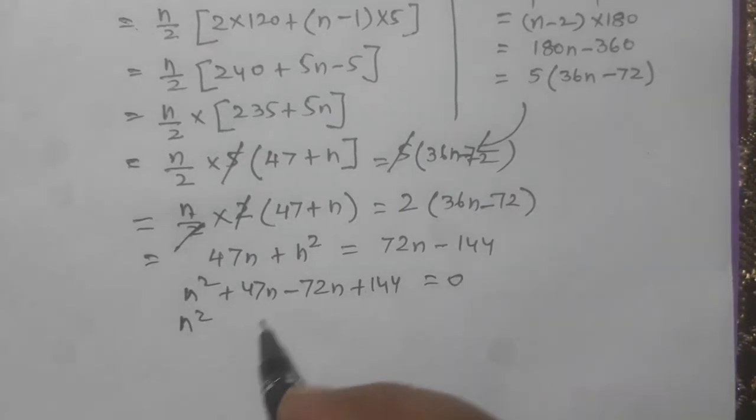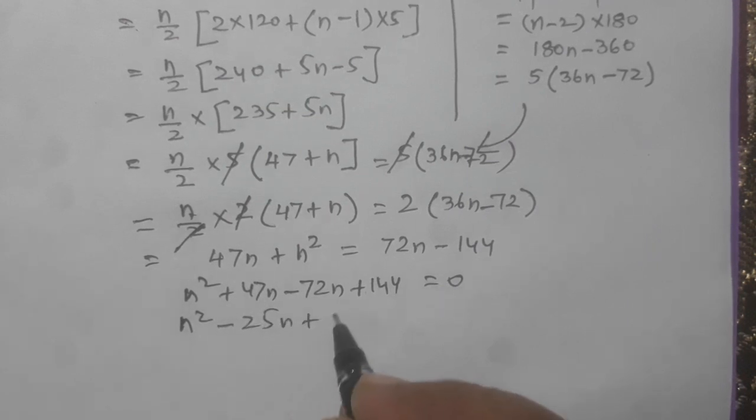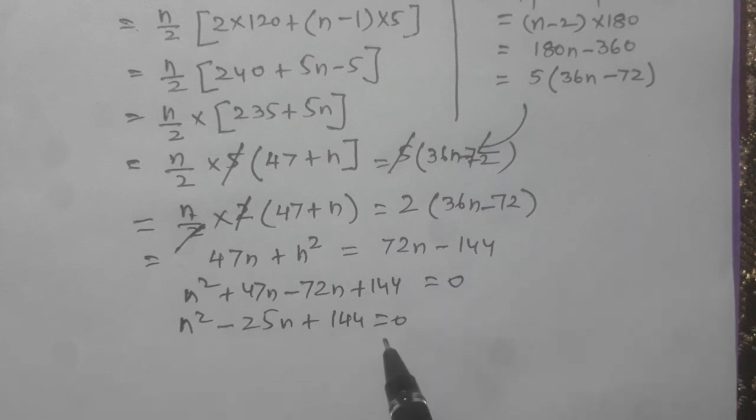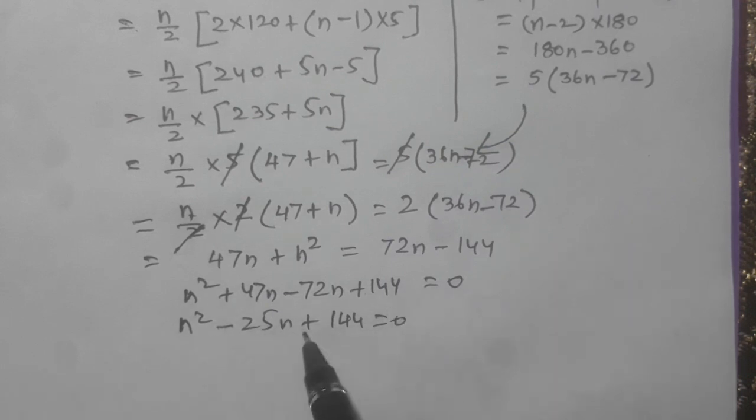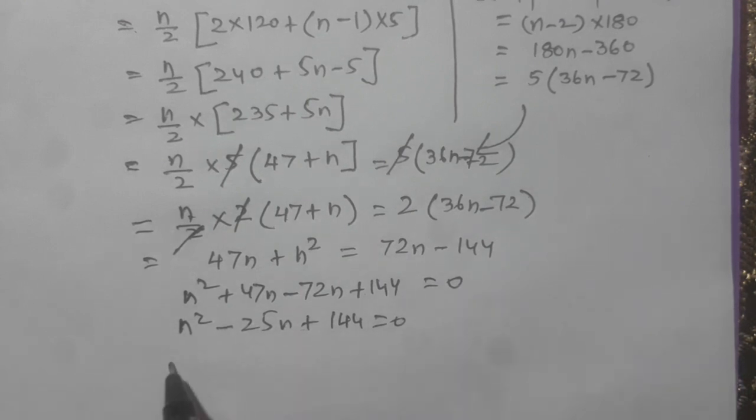N squared minus 25N plus 144 equals 0. Now it is a quadratic equation and we shall solve it by middle term split. 144 equals 9 into 16, and 16 plus 9 equals 25 also.